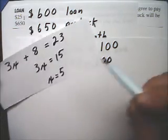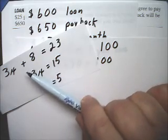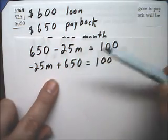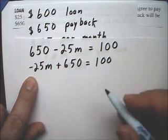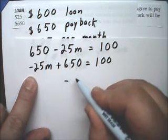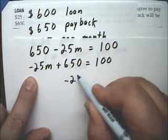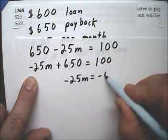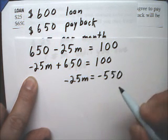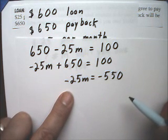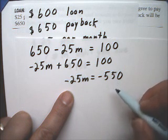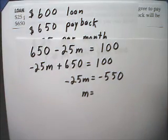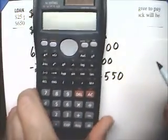Now, just like the equations we've worked out before — where we had to subtract $8 from both sides and then divide by $3 — here we're going to subtract $650 from both sides and then divide by negative $25. When I subtract $650 from both sides, I'm left with negative $25m equals negative $550. When I divide both sides by negative $25, negative divided by a negative is going to be a positive. So M is going to be positive, and all I have to do is divide $550 by $25.